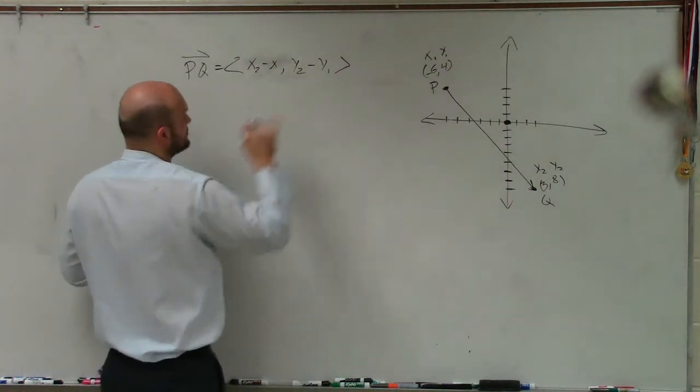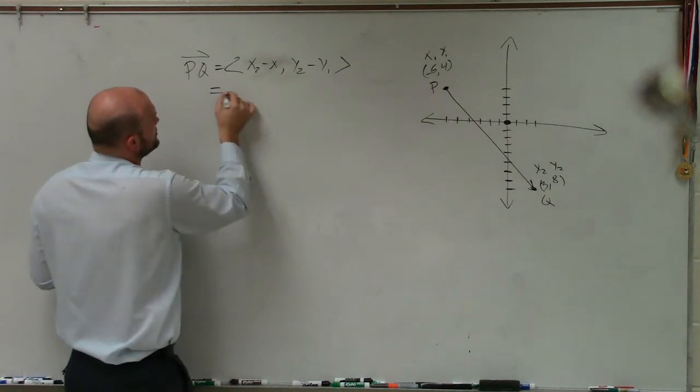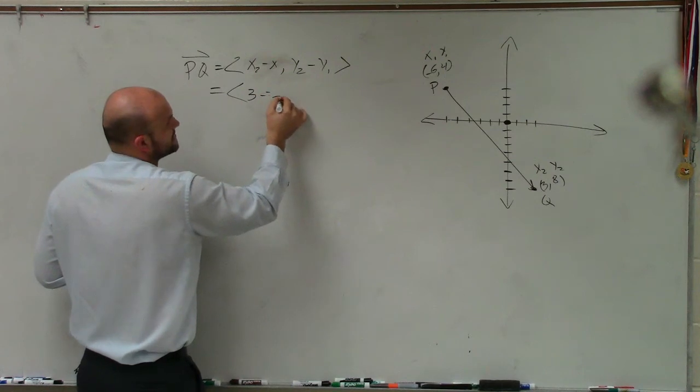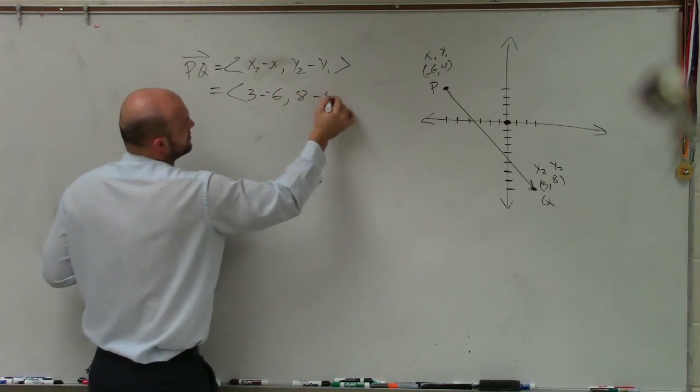So now I have my x1's and my y1's, x2's, and y2's. So now let's just go and plug them in. So x2 is going to be 3 minus a negative 6 comma y2 is 8 minus 4.